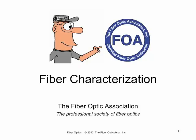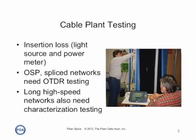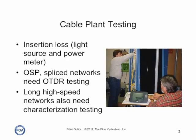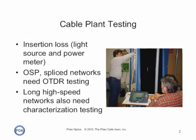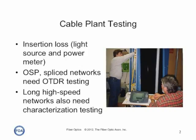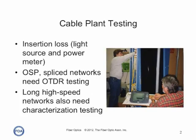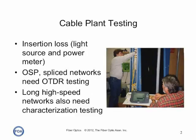We're going to look at the characterization of fiber that's already installed, particularly in long haul cable plants that often operate with wavelength division multiplexing and high bit rate systems. Every fiber optic cable plant should be tested by a light source and power meter, called an insertion loss test, because that test mimics the way the cable plant will be used by transmission systems, and provides the most reliable test data for ensuring the cable plant will work properly.